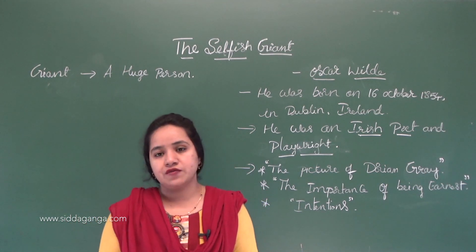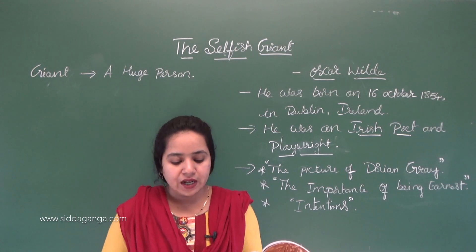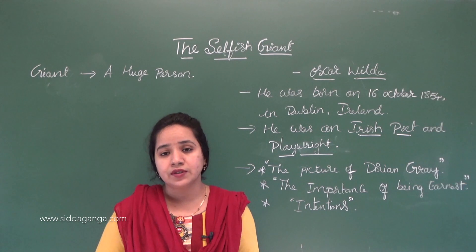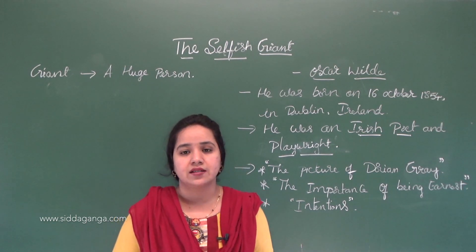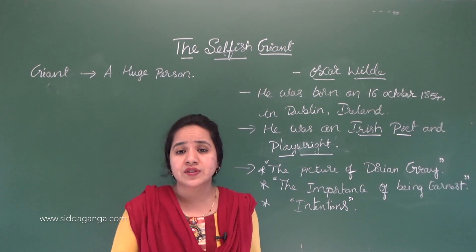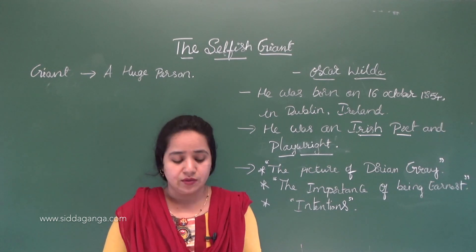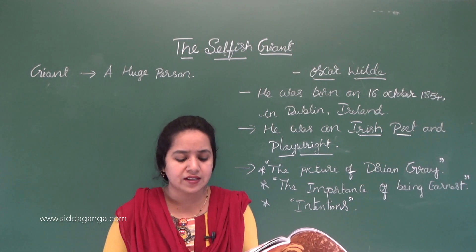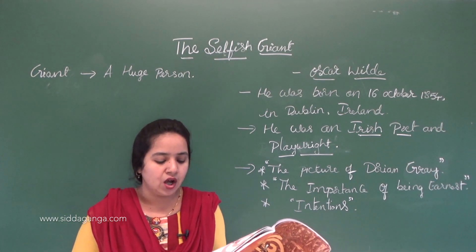So every afternoon, when the children came from school, they used to go to the Giant's garden for play — that was the daily routine of the children. It was a large lovely garden with soft green grass. Here and there in the grasses there were beautiful flowers that looked like stars. And there were twelve peach trees — peach is a kind of fruit, common in England in Europe — that in the springtime broke out into delicate blossoms of pink and pearl.